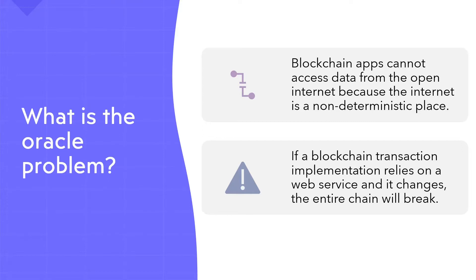If a blockchain relies on an external web service and that web service goes down or changes, the entire network could lose consensus. This is a really big problem and other people have created potential solutions before.